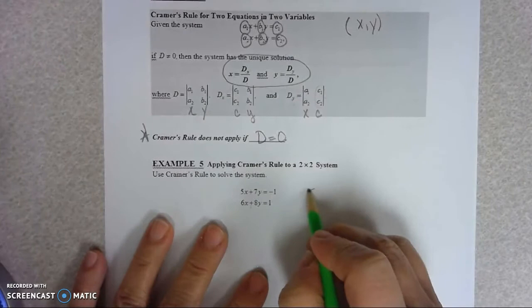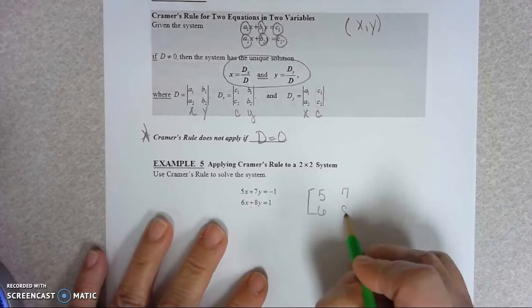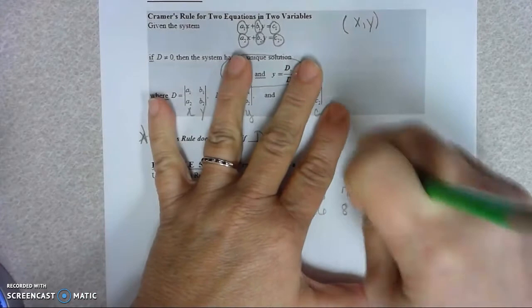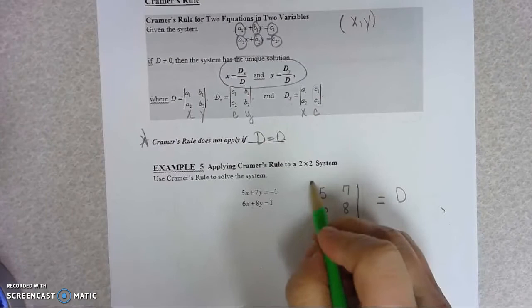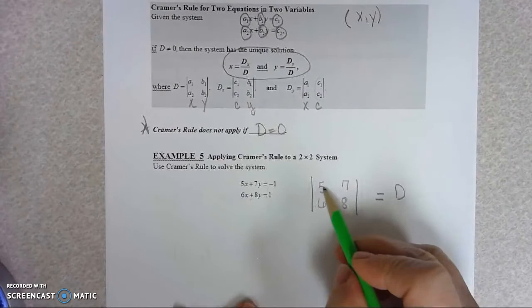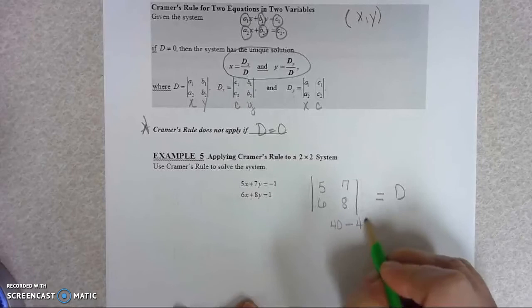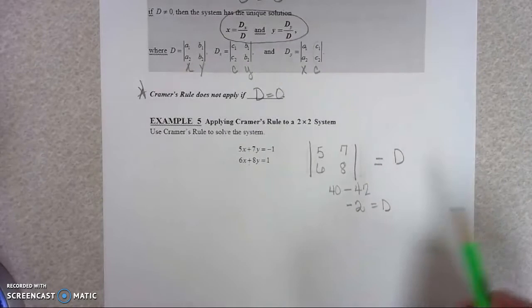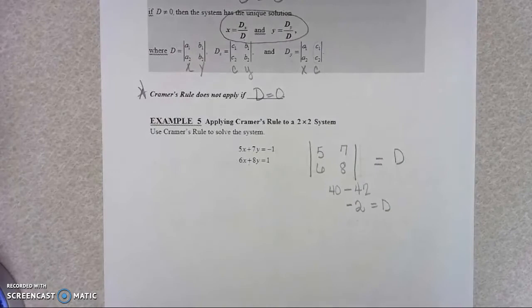So the first thing we're going to do in this example is set up our matrix. So 5, 6, 7, 8. That matrix would give us D. And I guess really, D is really a determinant. So let's see what that determinant is. 5 times 8 is 40 minus 6 times 7 is 42. That equals negative 2. So that's D.